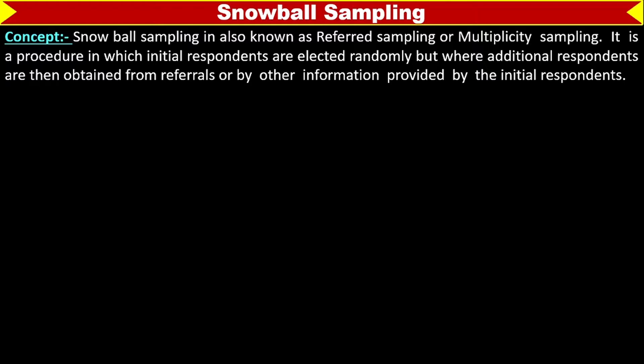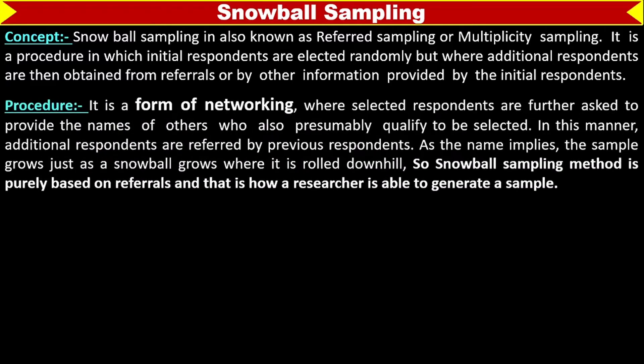Here the initial respondents are selected at random for the sample. We need additional respondents, which we have received from initial respondents through their references and the information provided by the same.